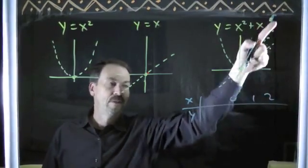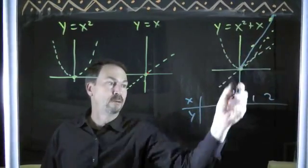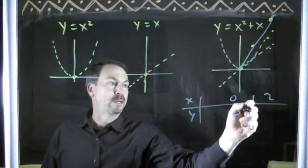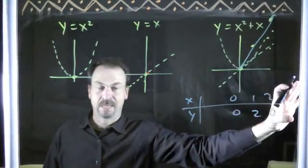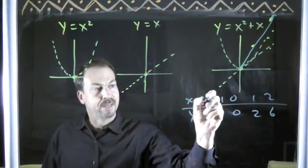0, 1, 2. I think the positives are not too scary. 0 squared plus 0 is 0. 1 squared plus 1 is 2. 2 squared plus 2 is 6. And so on. Definitely getting bigger. It's the things on this side that I'm wondering about.